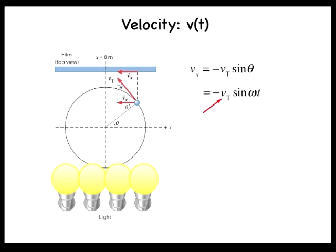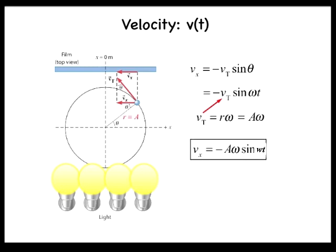Recall that the tangential velocity is related to the angular frequency and the radius through vt equals r times omega, where r, in this case, is equal to a. Finally, we have vx equals negative a omega times sine omega t, where omega is in radians per second. The maximum velocity occurs when sine omega t is equal to 1, so vmax equals a times omega.